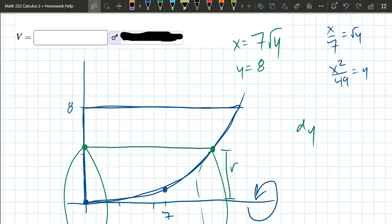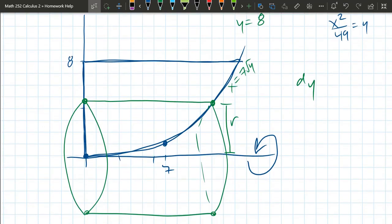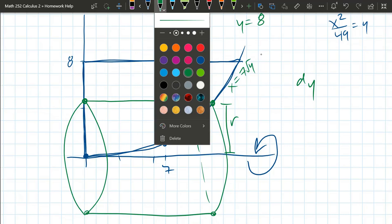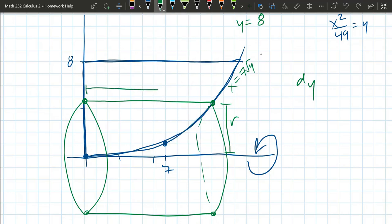So we did need a function x = 7√y. So we did need a function of y. And we need our height. So our height is right there, h.